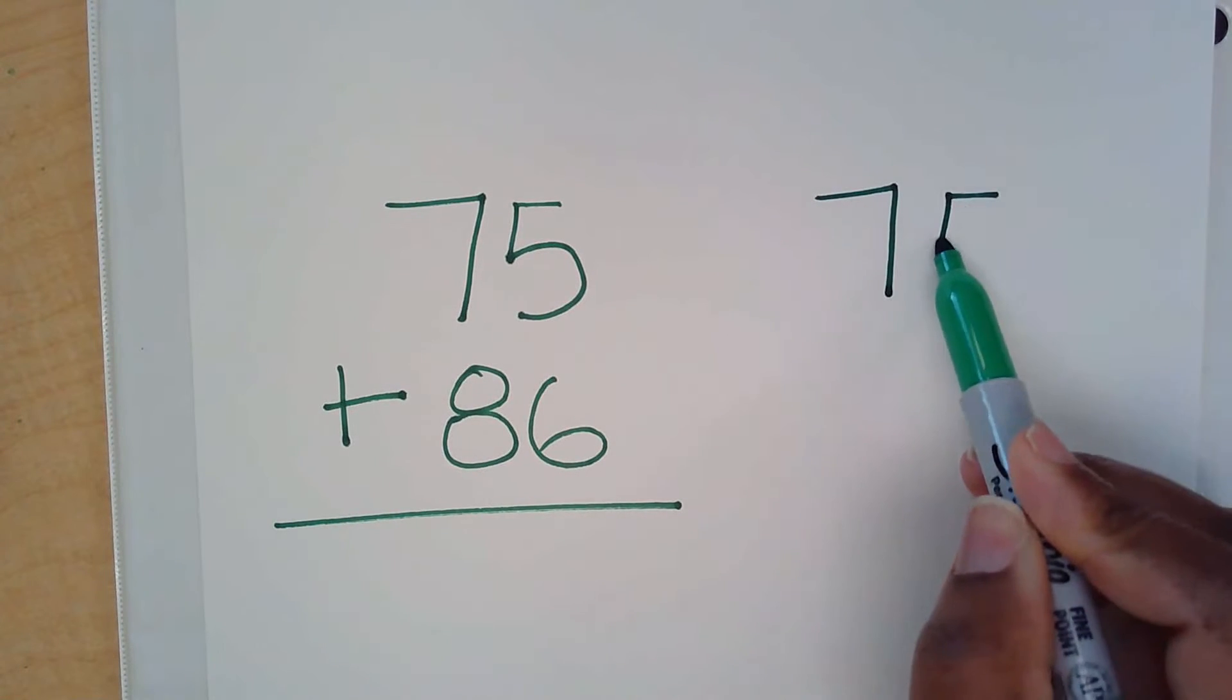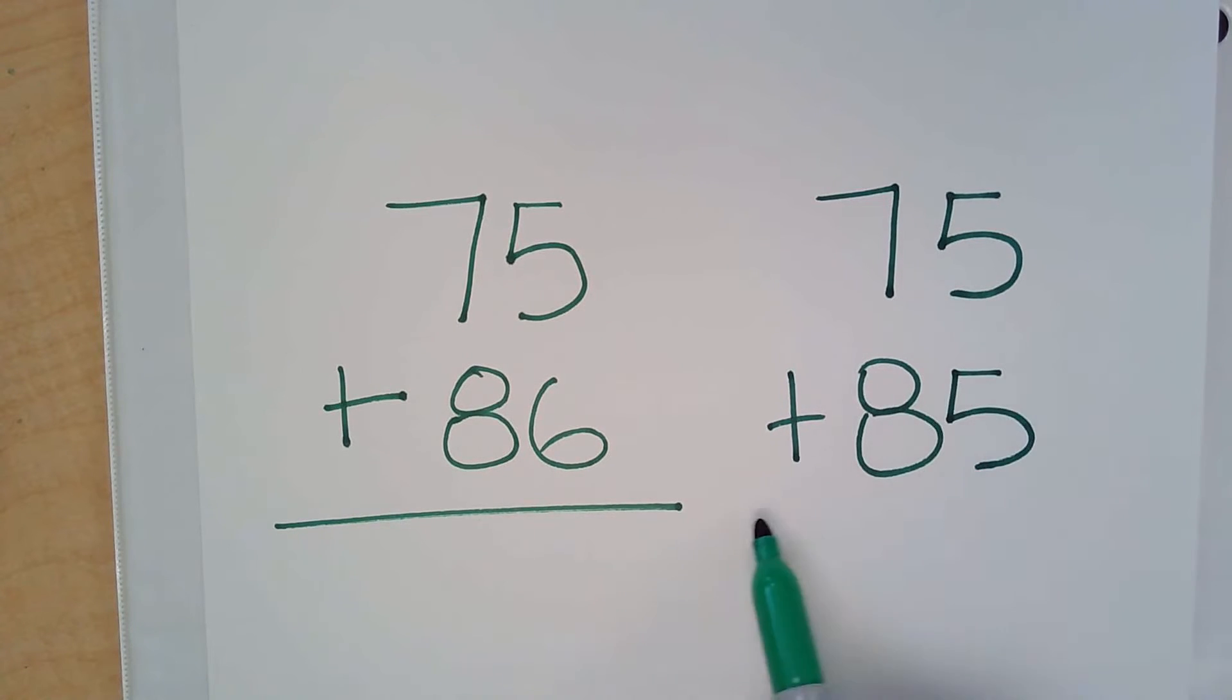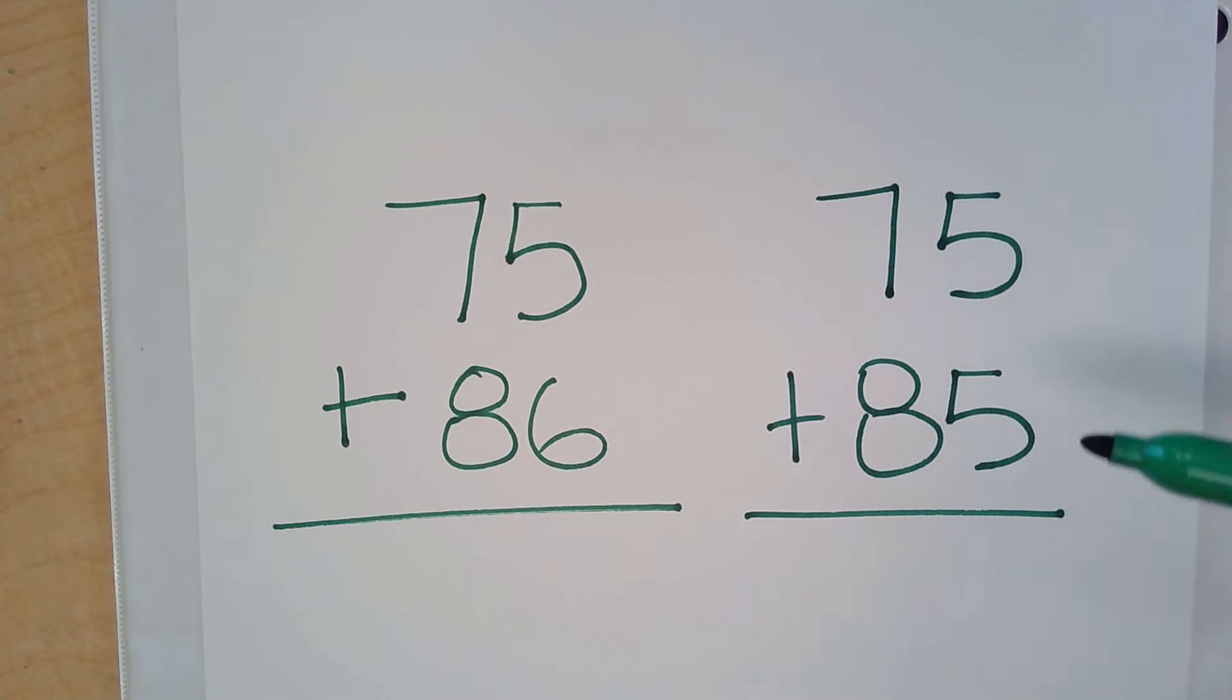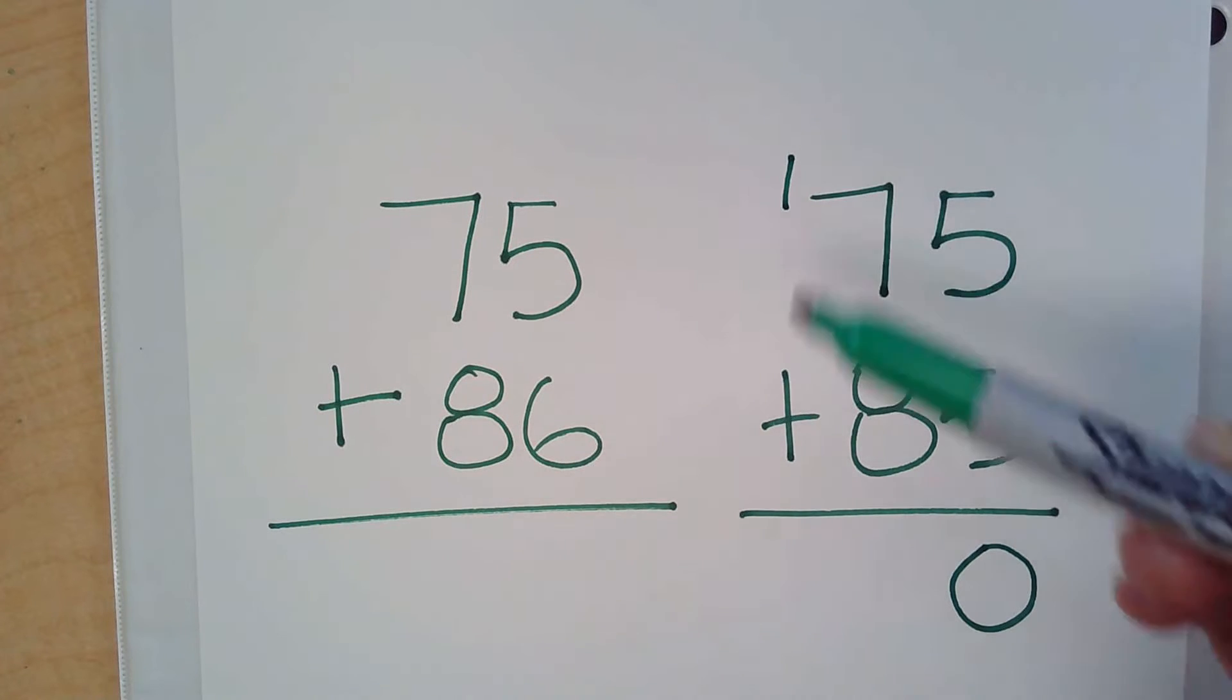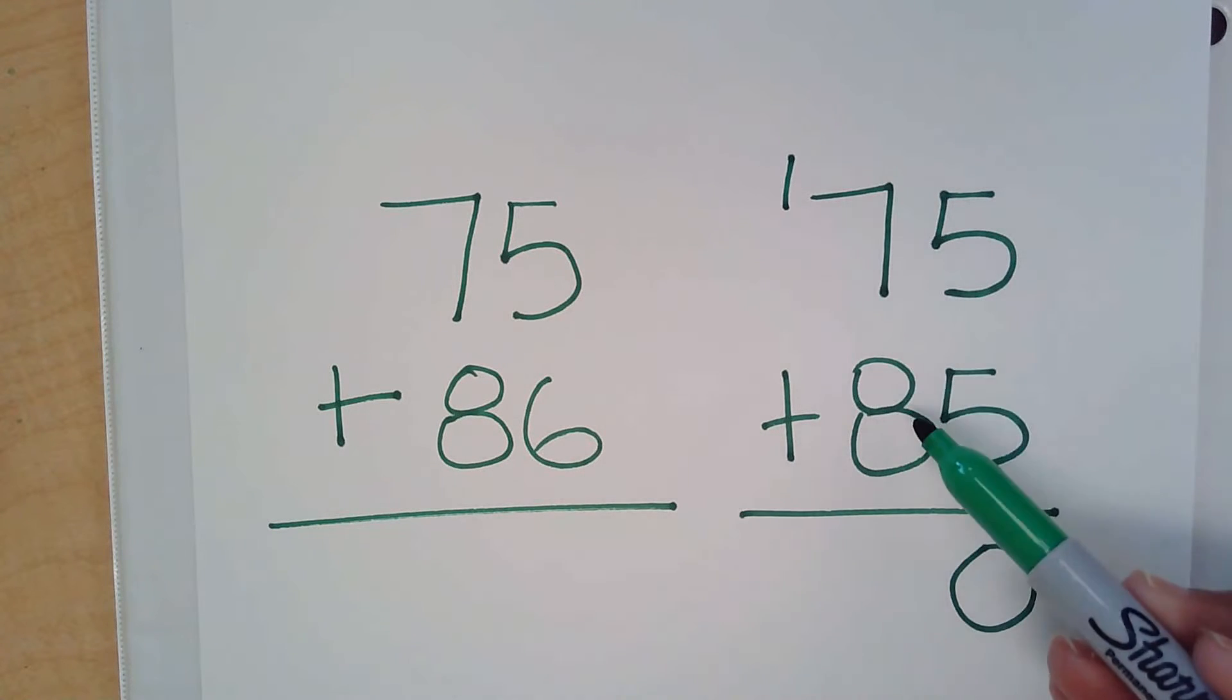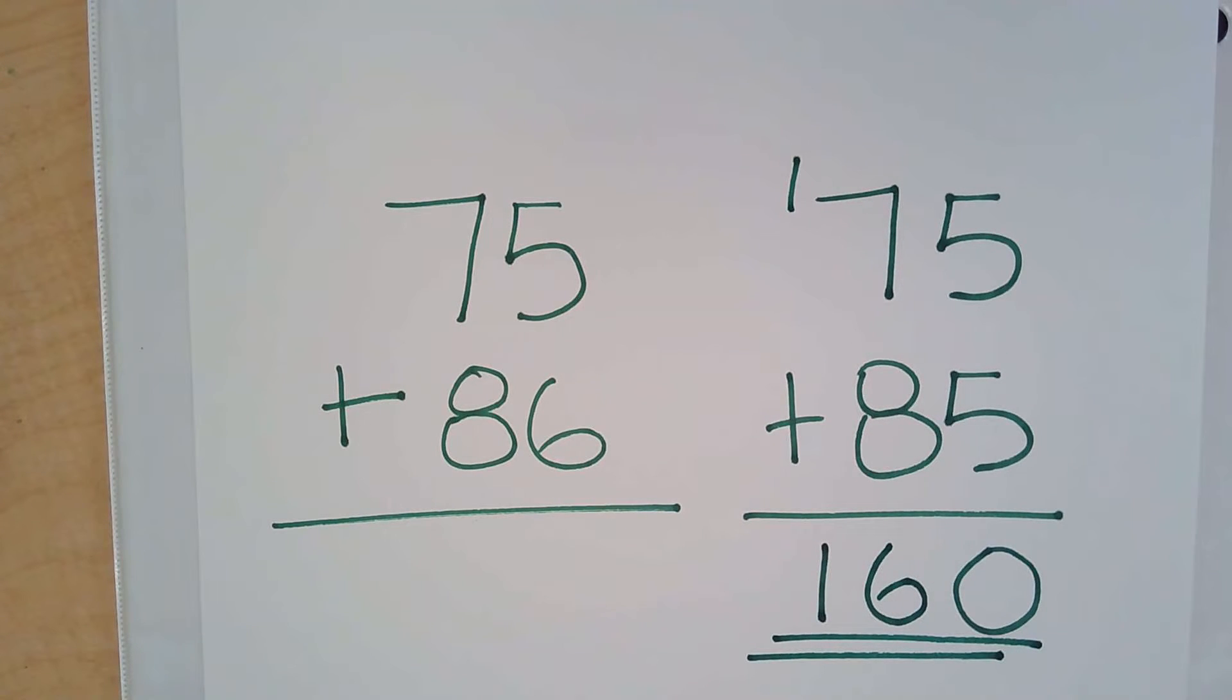So in this problem, 75 plus 85 would be one of the best ways to solve this problem and find the sum. Notice both numbers end with a 5, and this is what makes these two numbers so friendly. 5 plus 5 is 10 carry 1. 7 plus 1 is 8. 8 plus 8 is 16. This is a doubles fact. The answer is 160.